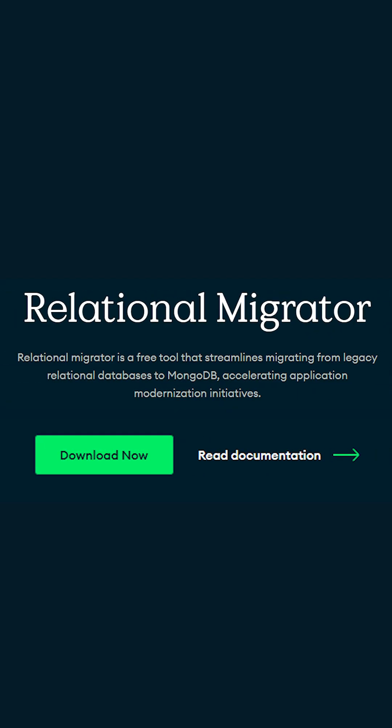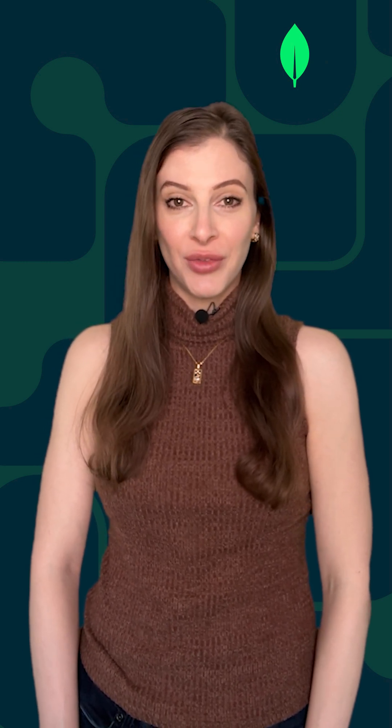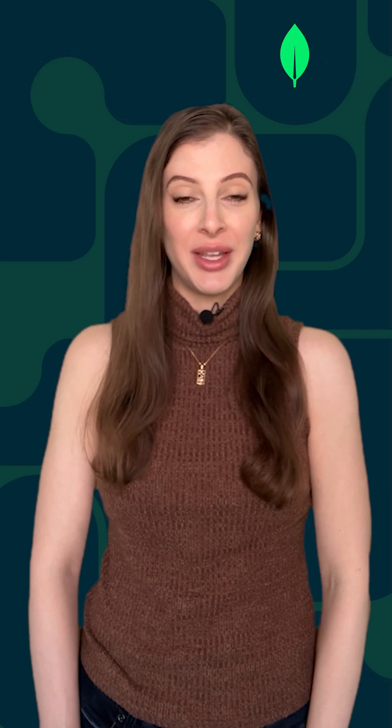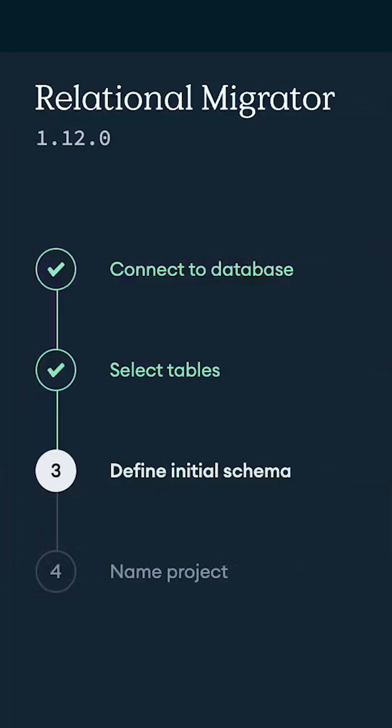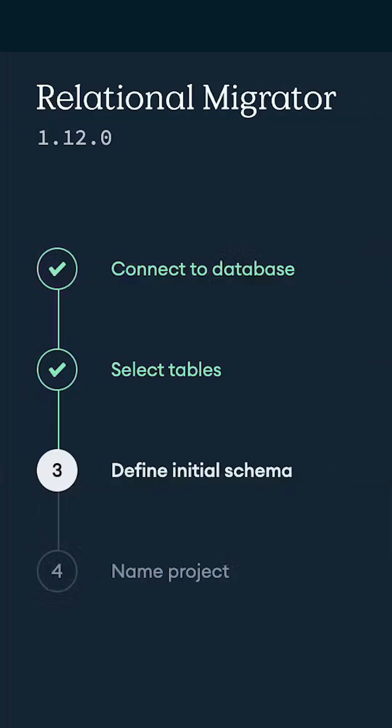Step one: download Relational Migrator. Step two: establish a connection. You can start from scratch or import an existing project. If you choose to start from scratch, you can connect to a live database, load schema from a file, or use a sample schema.